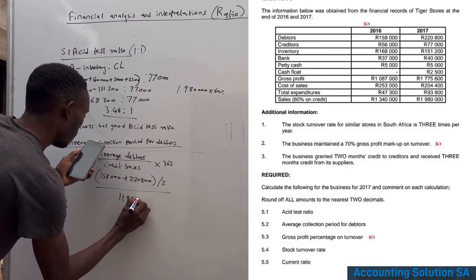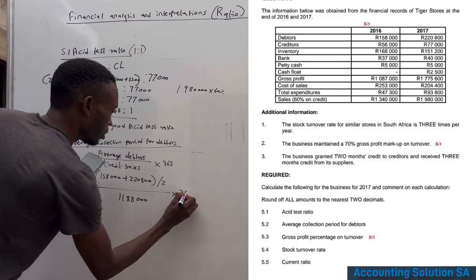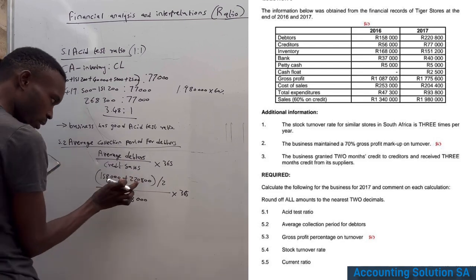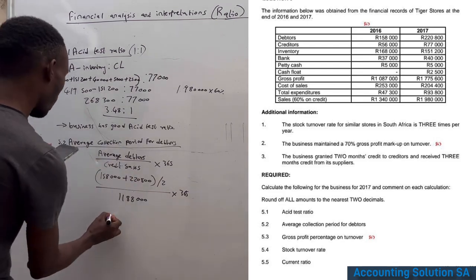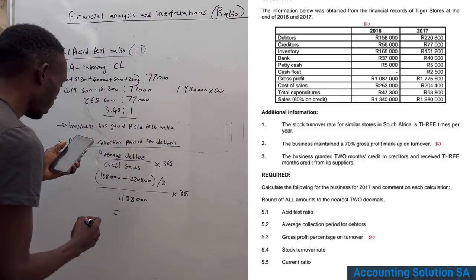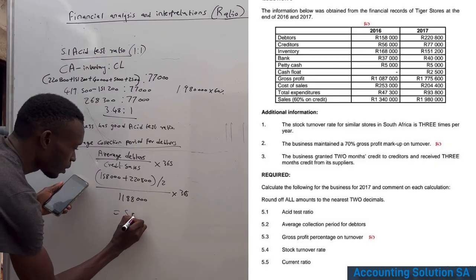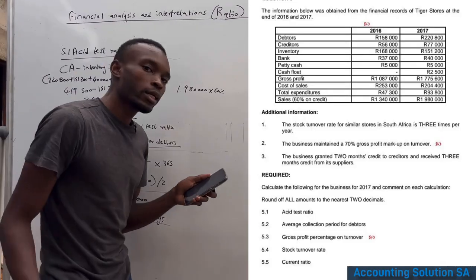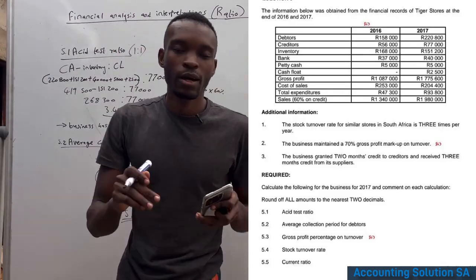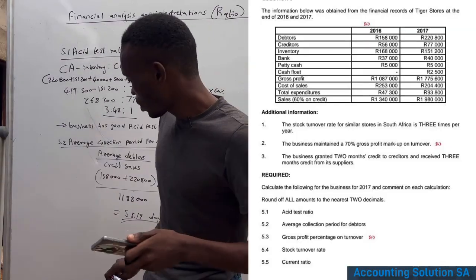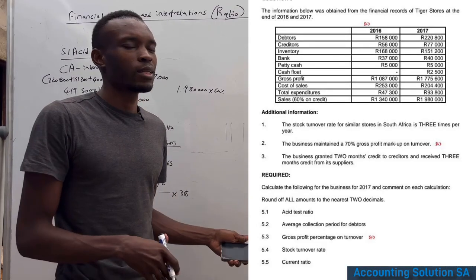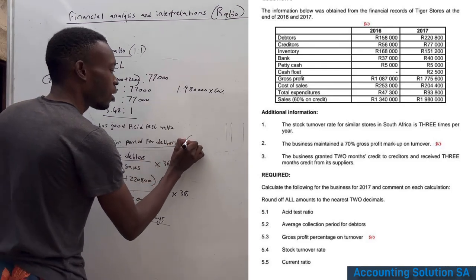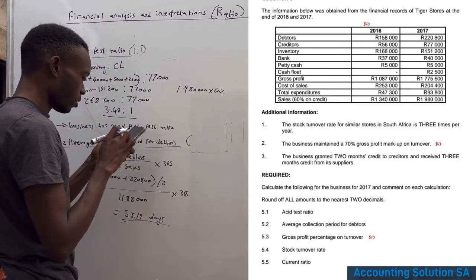After calculating, the result is 58.19 days, meaning it takes approximately 58 days to collect money from debtors. Whether this is good or bad depends on the business context; since the information didn't specify a norm, we compare against the creditor terms provided.